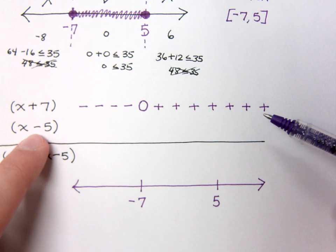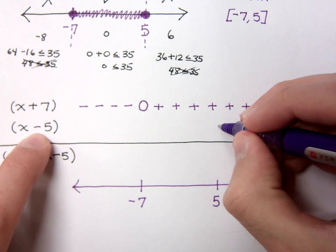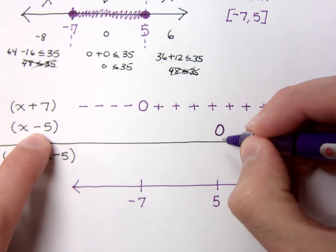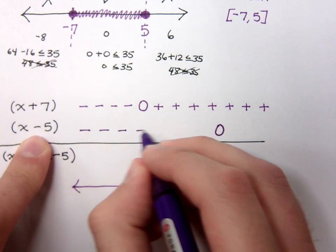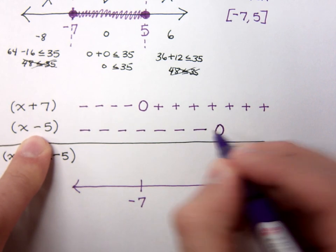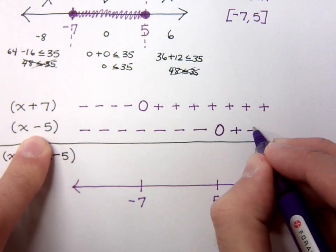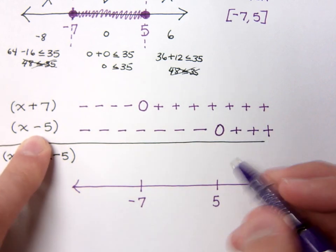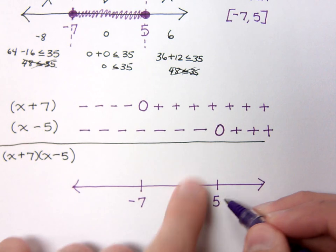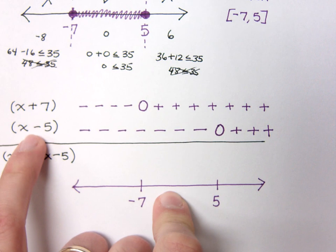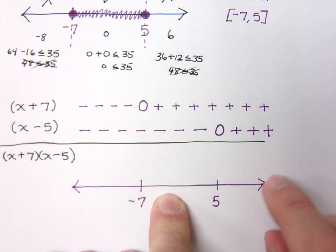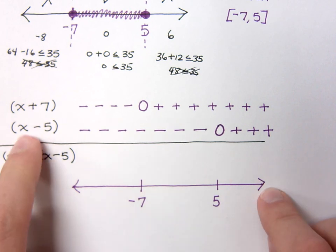Now, when we look at x minus 5, he has his gatekeeper, or his 0 value, at positive 5. When you pick values on the left side of him, he will return a negative value. And he's going to give you positive values on the right side. Just imagine. Here's 5. On this side is 0. If I plug in 0 here, I'm going to end up with a negative value. If I plug in 10, which is on this other side, I'm going to get a positive value.